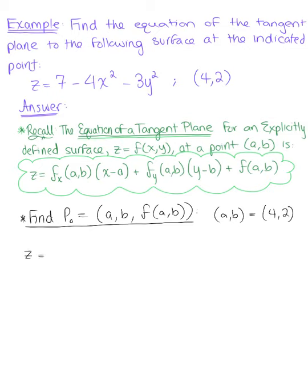We'll substitute these values in, so z equals 7 minus 4 multiplied by 4 squared, which is 16, minus 3 multiplied by 2 squared, which is 4. This gives us 7 minus 64 minus 12 for a final answer of minus 69.